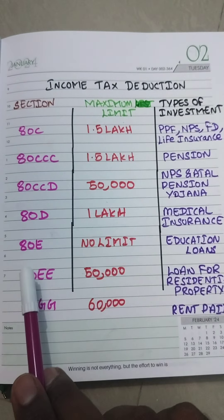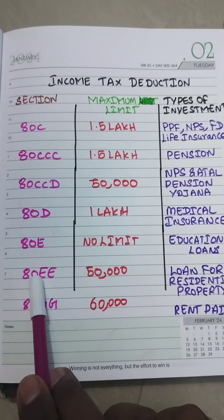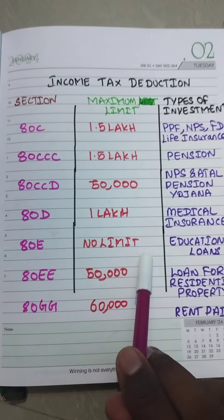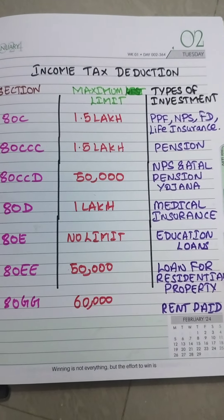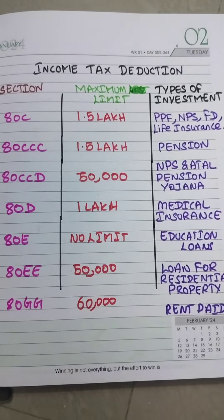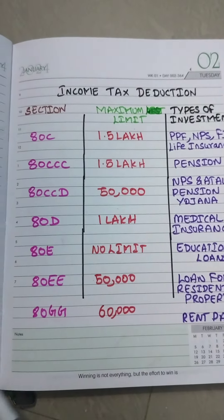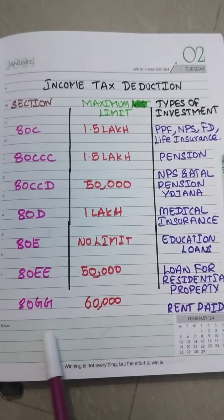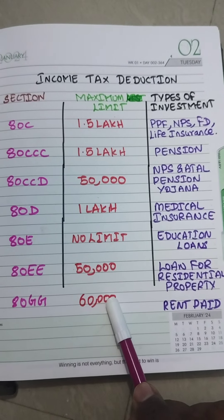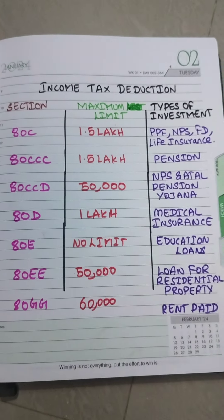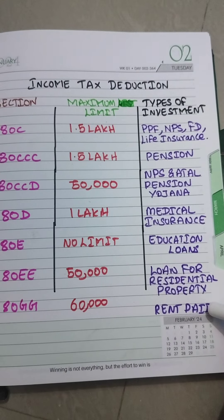Section 80EE has a maximum limit of 50,000 where you can show any loan against your residential property. The last one is Section 80G, with a maximum limit of 60,000, which can be further extended, and you can show that you have paid any rental amount on a monthly basis.